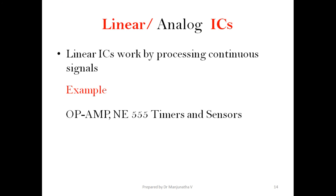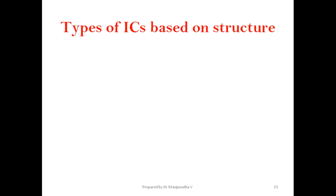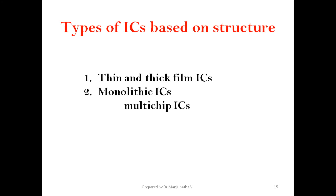Linear or analog ICs work by processing continuous signals. Examples include the op-amp, the NE555 timer, and sensors. Based on structure, ICs can be classified into thin and thick film ICs, monolithic ICs, and hybrid or multi-chip ICs.